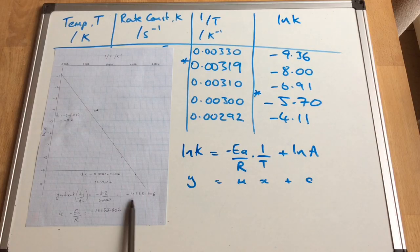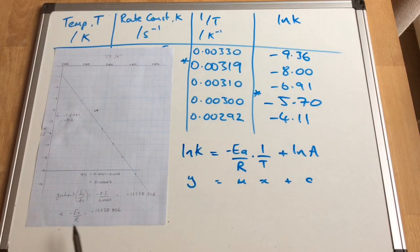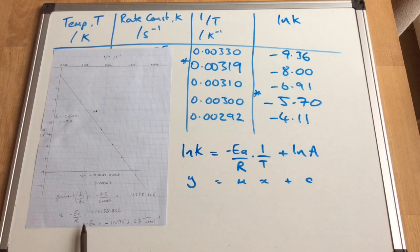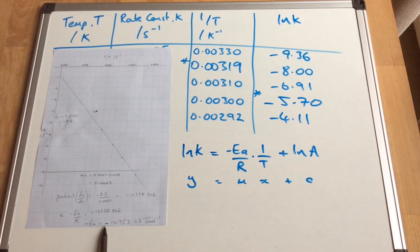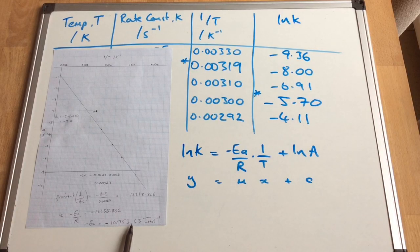So I'm getting negative 12238.806. So remember, what does the gradient actually equate to? It equates to minus Ea over R. So to find out what the activation energy is, we need to take that R term over to this side and multiply this number by R, which remember is 8.314. So you can see that's giving me minus Ea equals minus 101753.43. You can see I've got the unit in there. Remember, activation energy in the Arrhenius equation, because of joules being in the R term, it's in joules per mole.